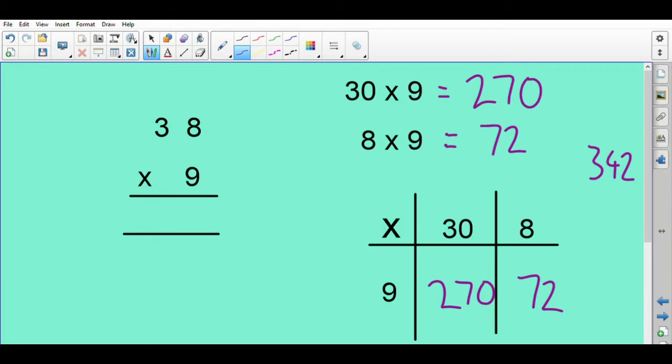Which is about right. And just a good way of thinking about it is do an estimate. 38 times 10 would be 380, so it's going to be a bit less than that. So here's how the method works. So we start with our 8, our units. We multiply by the 9. So that's the first bit. 8 times 9 is 72. So we put the two units in there. We carry the 7 into the tens column.